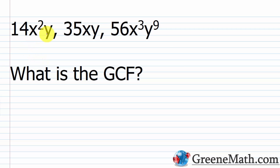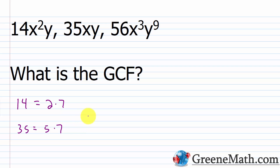If I look at 14x squared y, 35xy, and 56x cubed y to the ninth, and we ask what is the GCF, I'd start by factoring each number. So 14 is 2 times 7, 35 is 5 times 7, and 56 is 8 times 7, and 8 is really 2 cubed. So I can write this as 2 cubed times 7. All I'm looking for, when finding the greatest common factor, is to go through the prime factorizations and find what's common to everything.